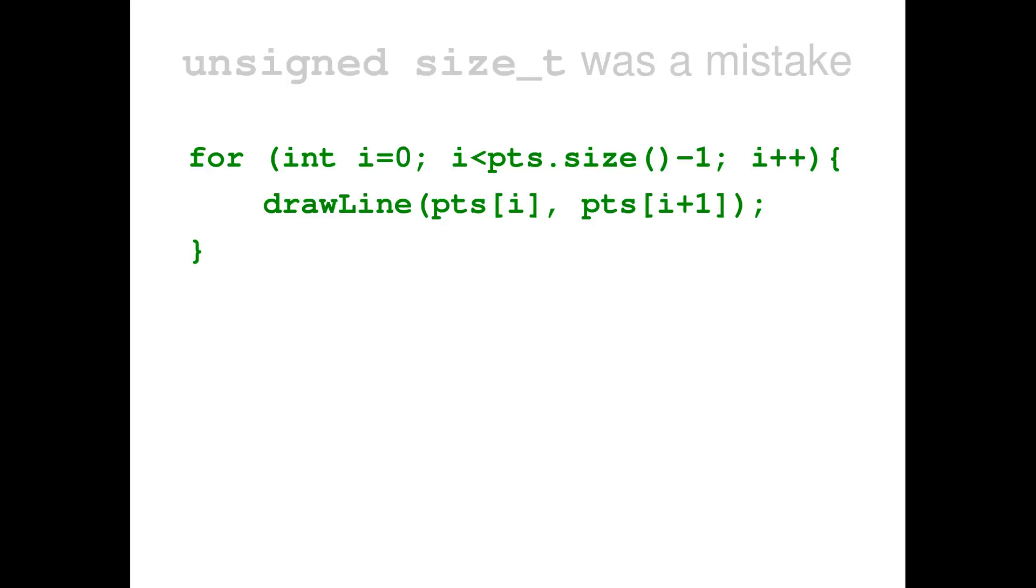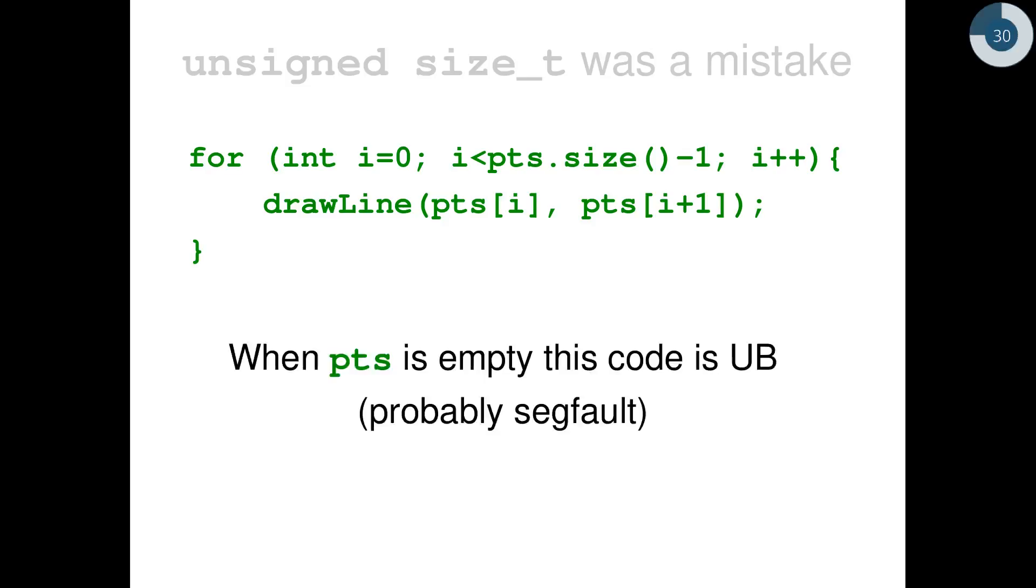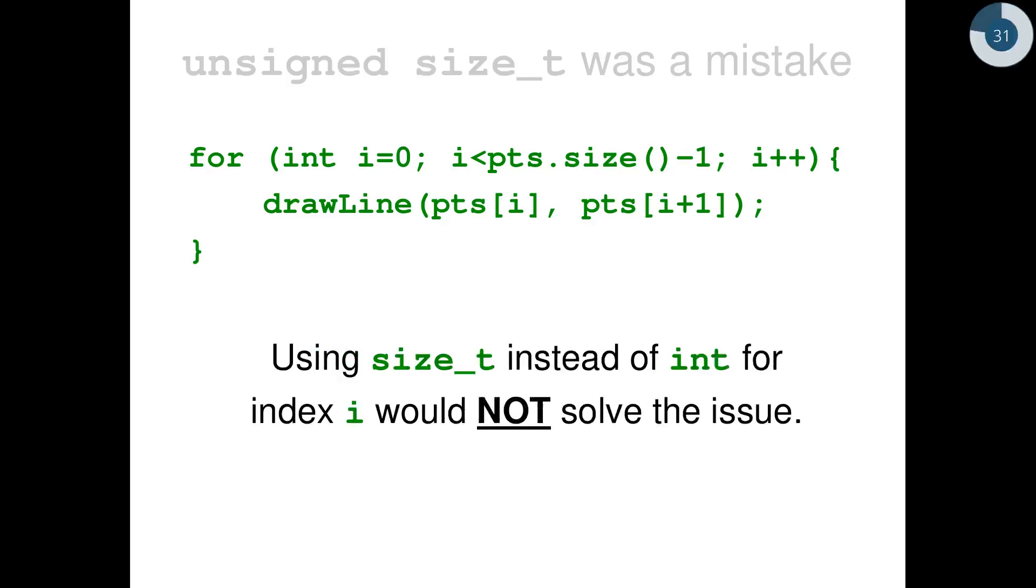It tries to draw the lines connecting a vector of points. So pts is a standard vector. And this loops from zero to size minus one and draws a line from a point to the next one. That is point i to point i plus one. This code is buggy. And the problem is that when pts is the empty vector, this code has undefined behavior and will probably get a segfault. You will probably get, compiling this code with a modern compiler, a warning because of the i less than pts.size() minus one. And the warning will be that you should not mix signed integers and unsigned integers in the same expression. And so you might be tempted to fix this by using a size_t for i, for the variable. But this actually would not solve the issue at all.